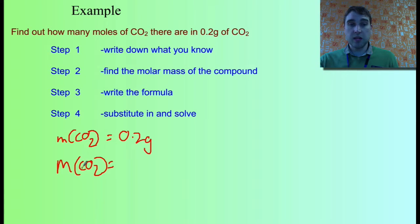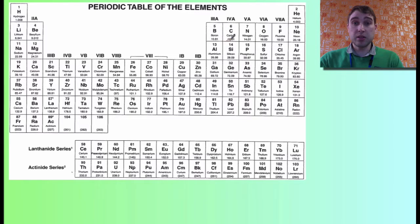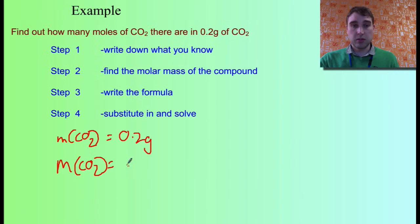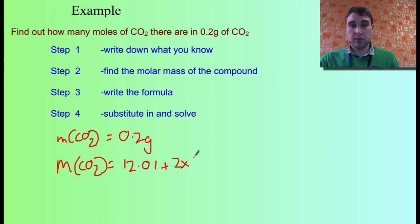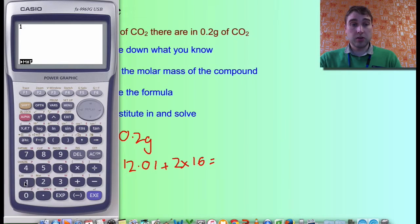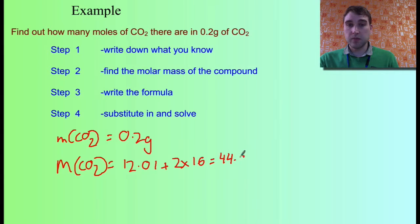The molar mass of CO₂ is going to be carbon plus 2 times oxygen. We go to the periodic table — carbon is 12.01, and oxygen is 16. So the molar mass equals 12.01 plus 2 times 16. Putting that in the calculator: 12.01 plus 2 times 16 equals 44.01. So the molar mass of carbon dioxide is 44.01 grams per mole.